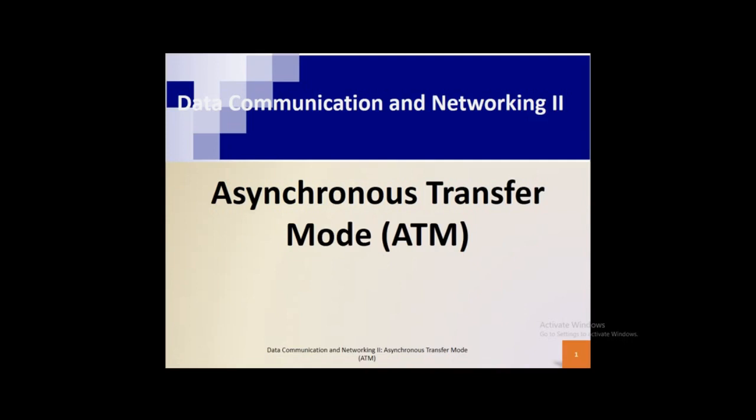The key terms here: you need a dedicated path established between two devices before any kind of information can be transmitted back and forth. And it usually relates to transmission that involves a continuous flow or continuous stream of data. Regular telephone calls are a typical example of what you'd consider circuit switching.